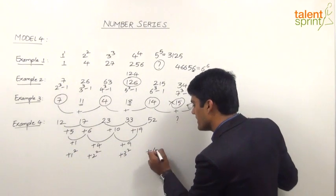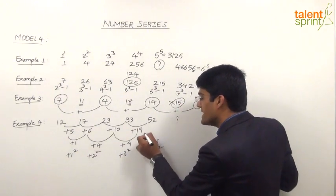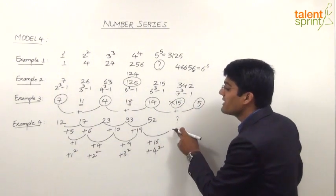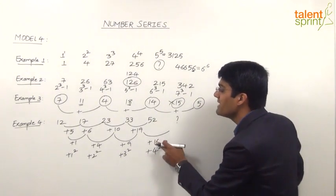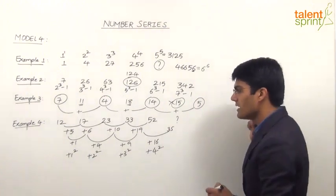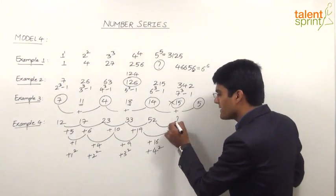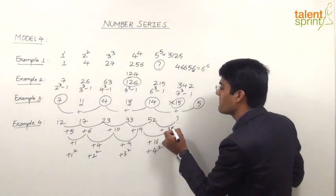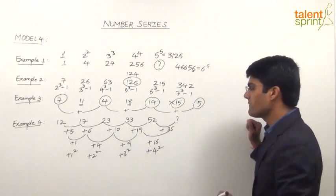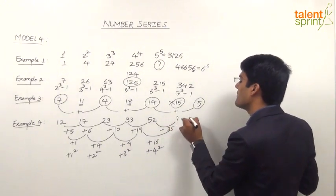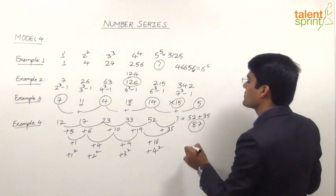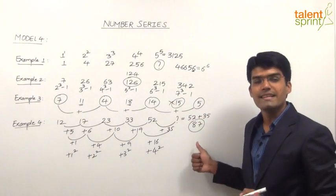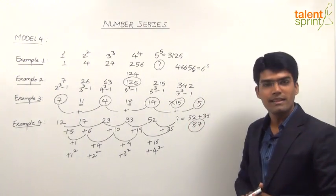That 4 square here is nothing but 16. So 19 plus 16 should give us the difference between 52 and question mark. 19 plus 16 is equal to 35. And now if you try to apply this, that means 52 plus 35 should give us the value of question mark. So question mark will be equal to 52 plus 35, that is 87. So the answer for this question here is 87.